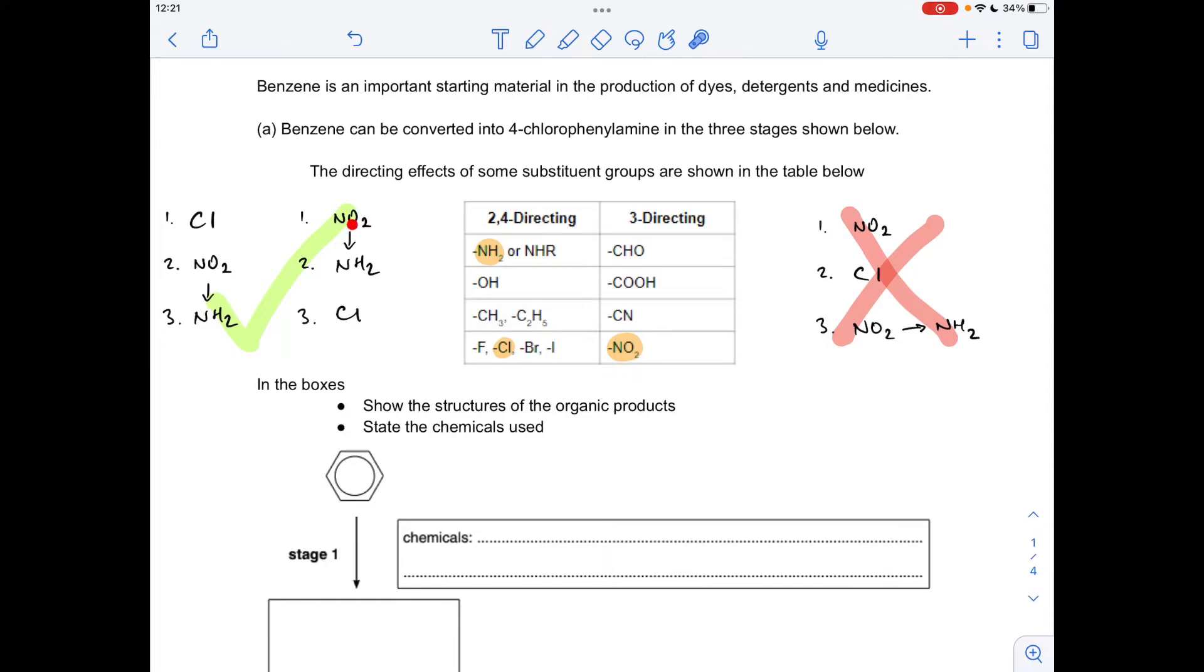Likewise, if you put the nitro group on first and then convert it to the amino group, you can see the amino group's also a 2-4 directing group. So once the amino group's on, it will direct the chlorine to position 2 and 4. Remember we want the 4-isomer.